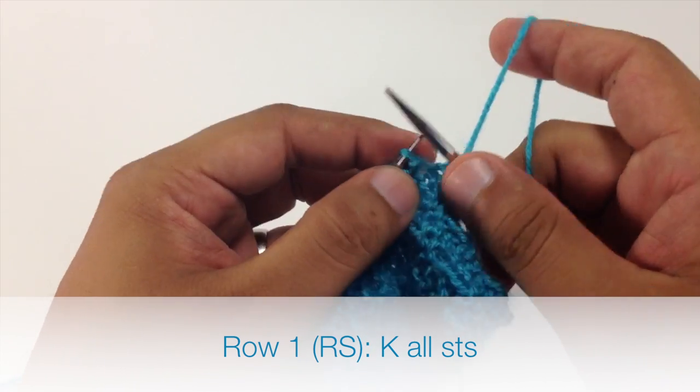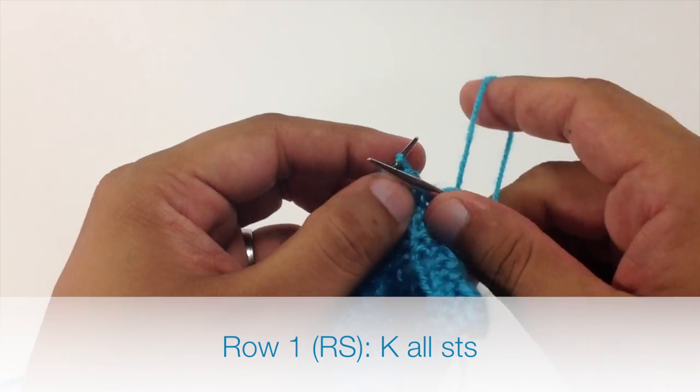Row 1. Beginning on the right side of your work you're going to knit all stitches.